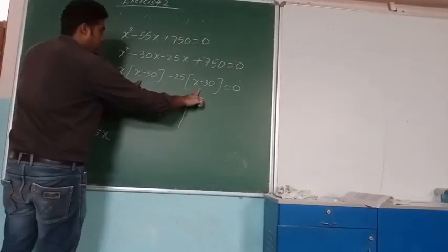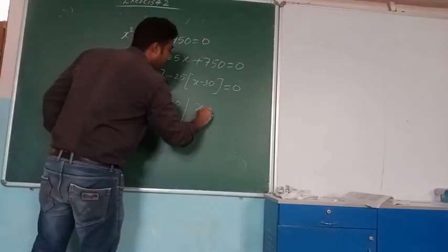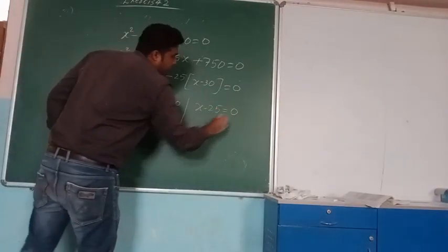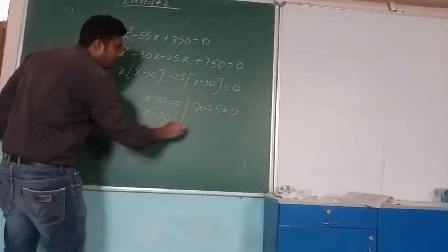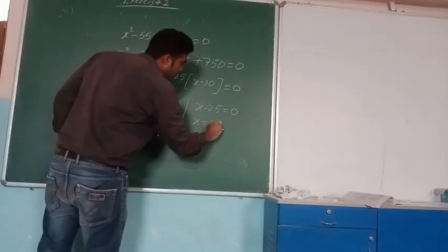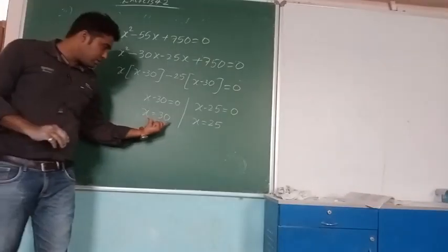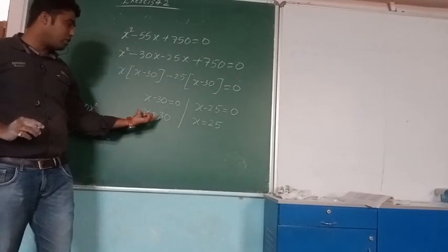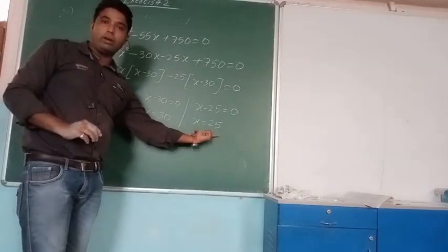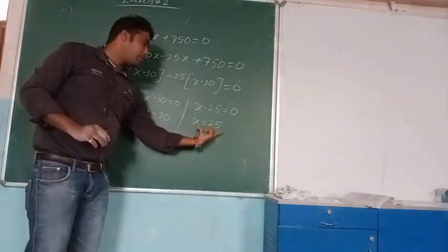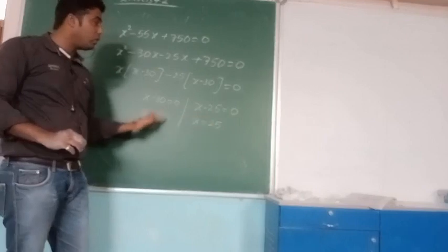So we get x minus 30 equals 0 and x minus 25 equals 0, which gives x equals 30 and x equals 25. Both are your answers. You can consider the number of toys as 30 or the number of toys as 25. Whichever you want, you can take.